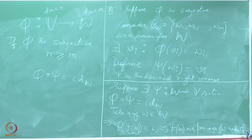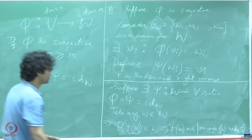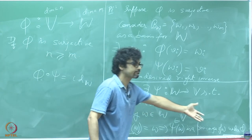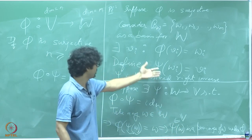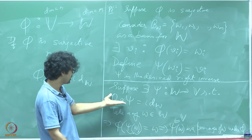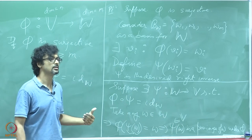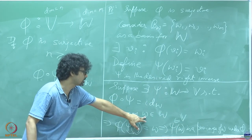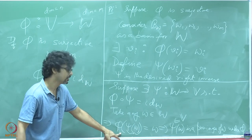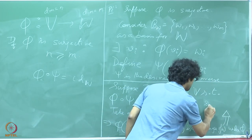This means psi(w) is a pre-image of w under phi. So any w you pick has a pre-image — psi(w) belongs to the vector space V. For any arbitrary w, I can construct its pre-image with respect to phi by looking at psi(w). Therefore, surjection is established. We have proved both sides of the assertion.